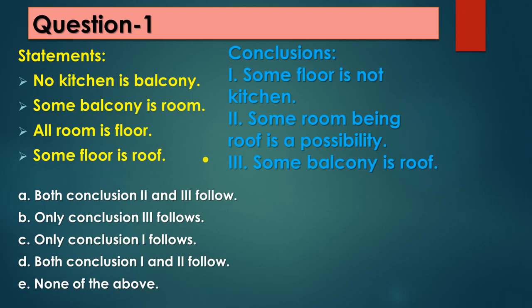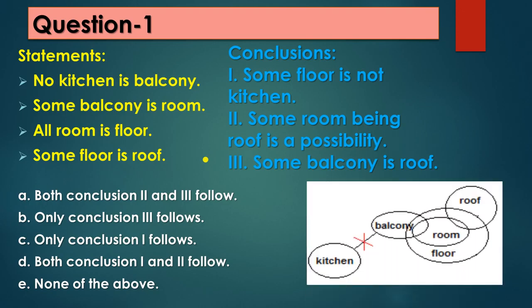Question 1: The statements are — no kitchen is balcony, some balcony is room, all room is floor, some floor is roof. Based on these statements there are three conclusions and five options. To solve this, you first make a Venn diagram. 'No kitchen is balcony' — this is the kitchen and this is the balcony, with a cross symbol showing these two are different and kitchen does not belong to balcony.